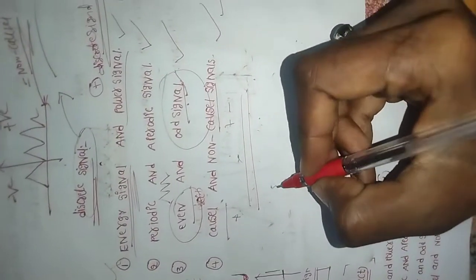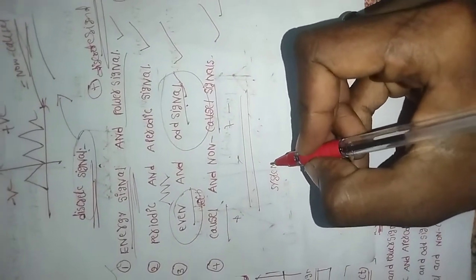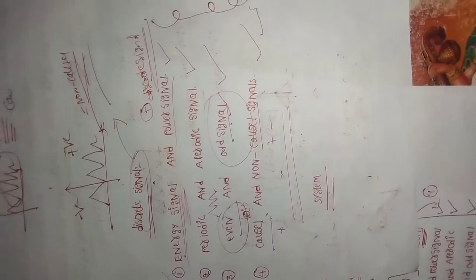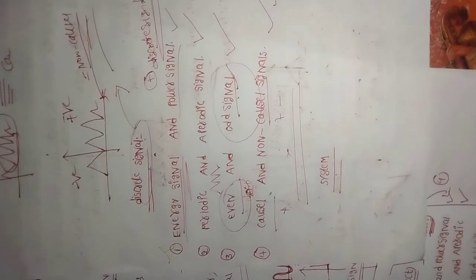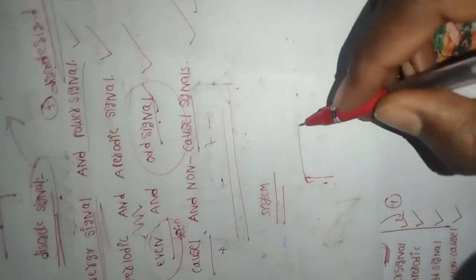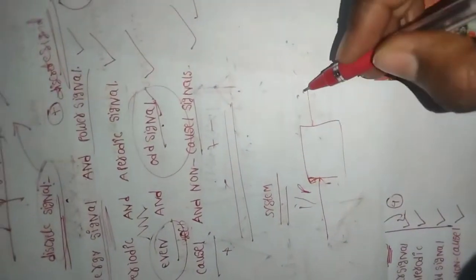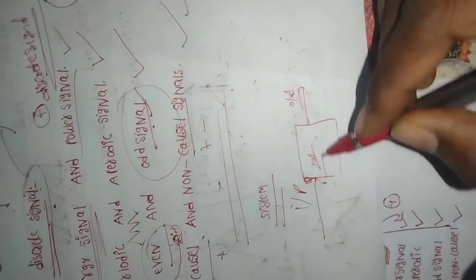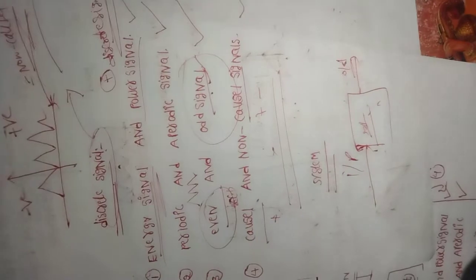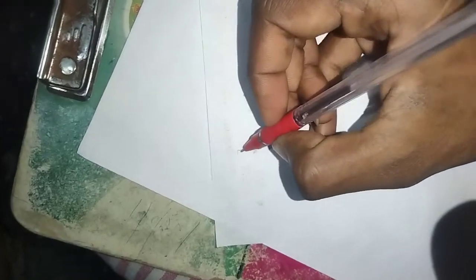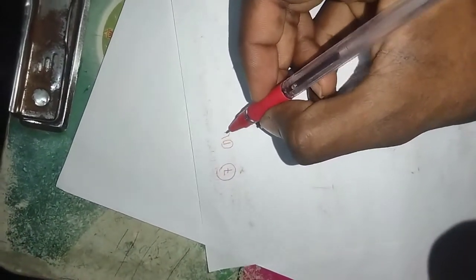In continuation, a system contains a set of functional blocks. Any system with respect to the response of input and output can be classified. The system classifications include: linear and nonlinear systems.